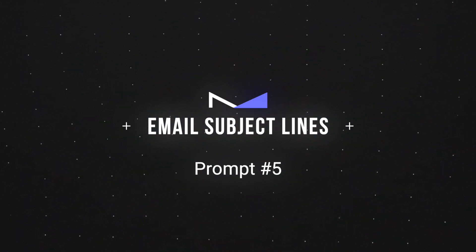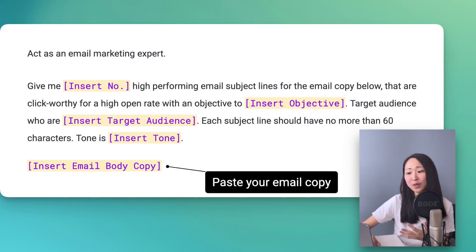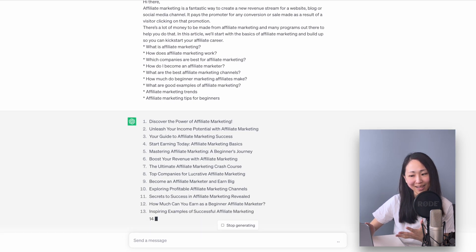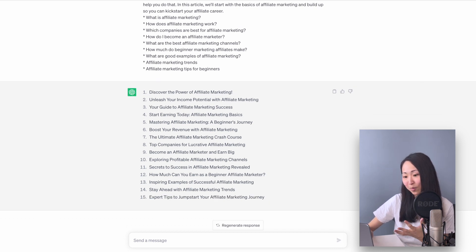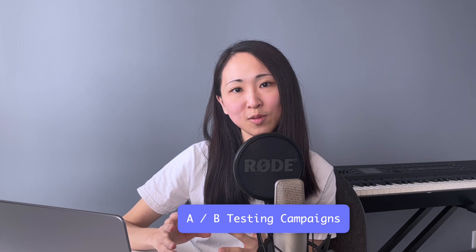Prompt number five: email subject lines. When it comes to email marketing, your subject line almost determines the success or failure of your campaign. People will only open your email when it's click-worthy. Paste your email body copy to give more context to ChatGPT to draft more meaningful subject lines. In just a few seconds, you'll get a list of email subject lines to start with. Another tip: you can even turn it into an A/B testing campaign by asking ChatGPT to generate different subject lines and copy based on two sets of personas with different pain points.